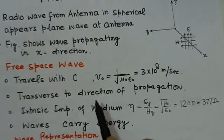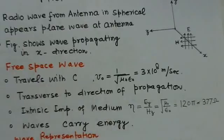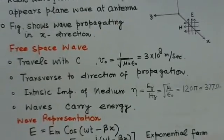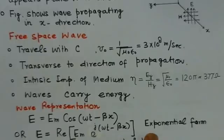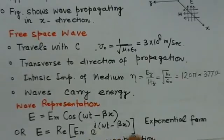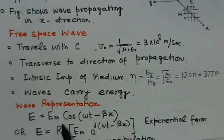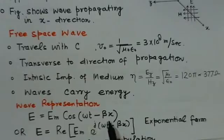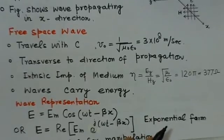This is the simple case of a free space wave. We can represent these plane waves in mathematical form. If we consider a sinusoidal variation like E = Em cos(ωt - βx), it represents a wave traveling in the plus x direction where Em is the magnitude of the electric field.